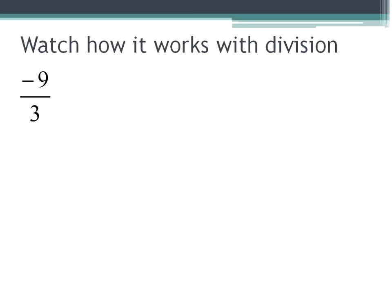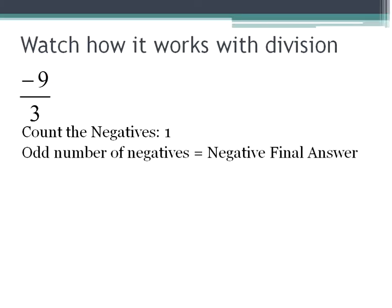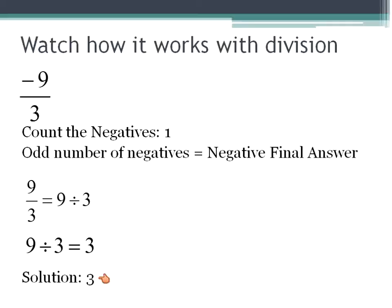So negative 9 divided by 3. We're going to count the number of negative numbers. I have a 9 and a 3. 9 is negative, so I have one negative number. 1 is an odd number, so therefore the final answer is going to be negative. I can go ahead and divide — 9 divided by 3 is 3, and my solution will be positive 3.